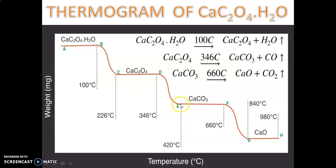In region E to F there is no mass change, which means calcium carbonate is stable up to 660°C. From region F to G, calcium carbonate at 660°C dissociates into calcium oxide and carbon dioxide. From G onwards to H, at approximately 840°C to 980°C, calcium oxide has no further change — the compound is ultra stable. Calcium oxide is highly stable in this region.